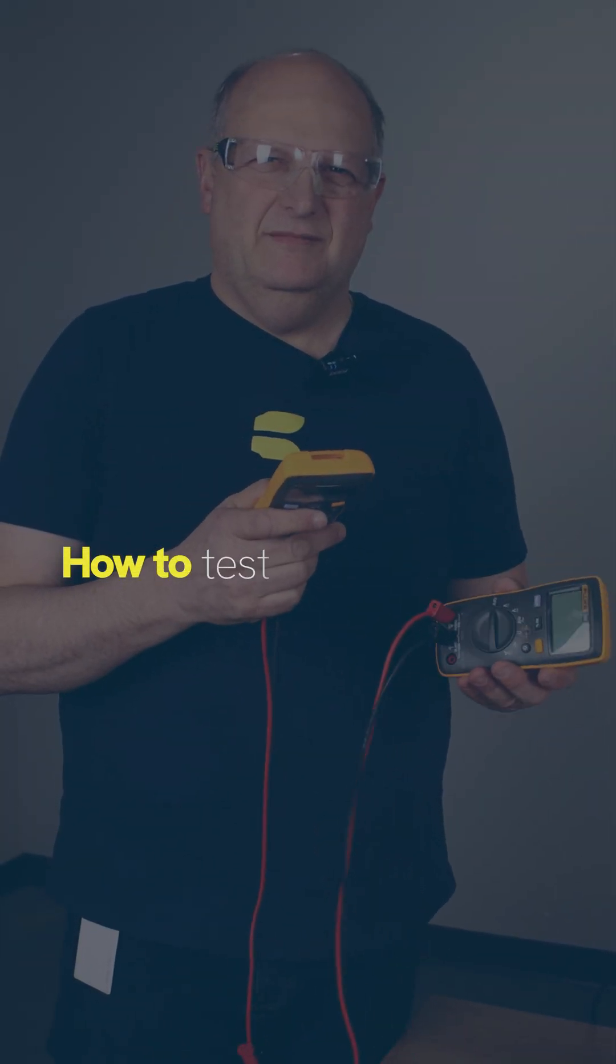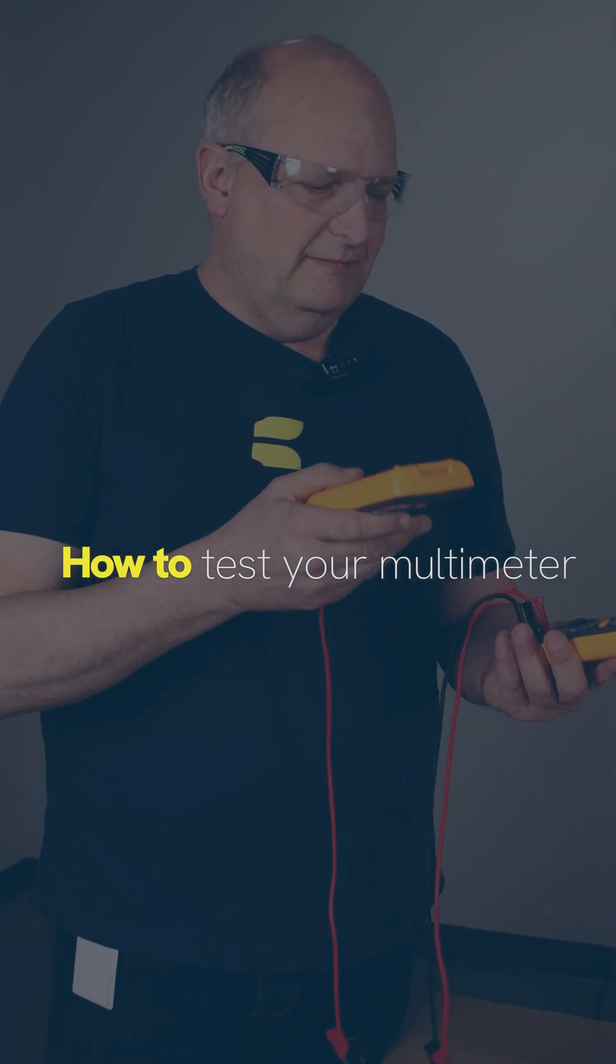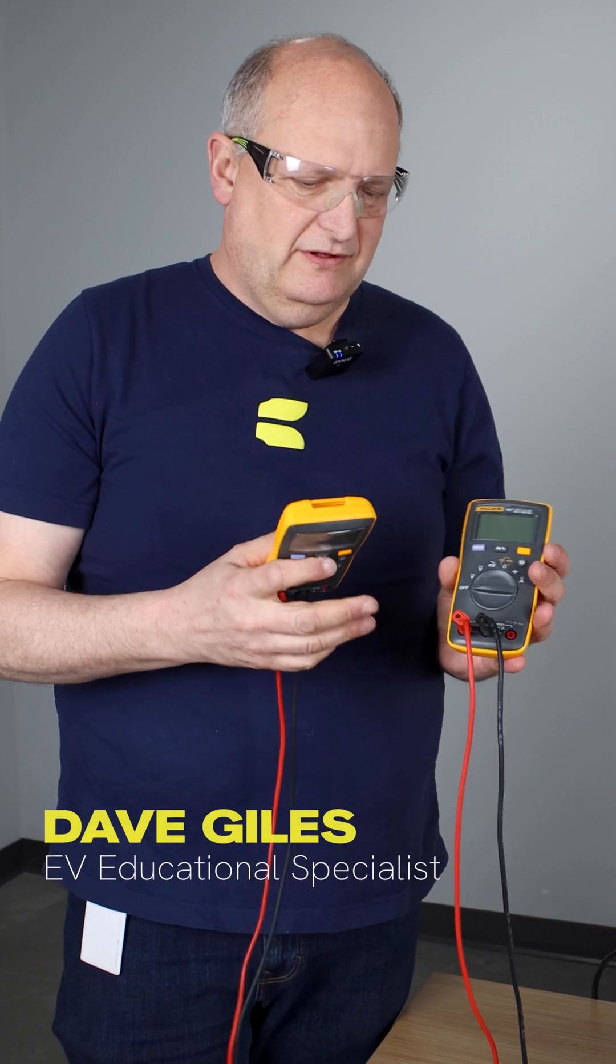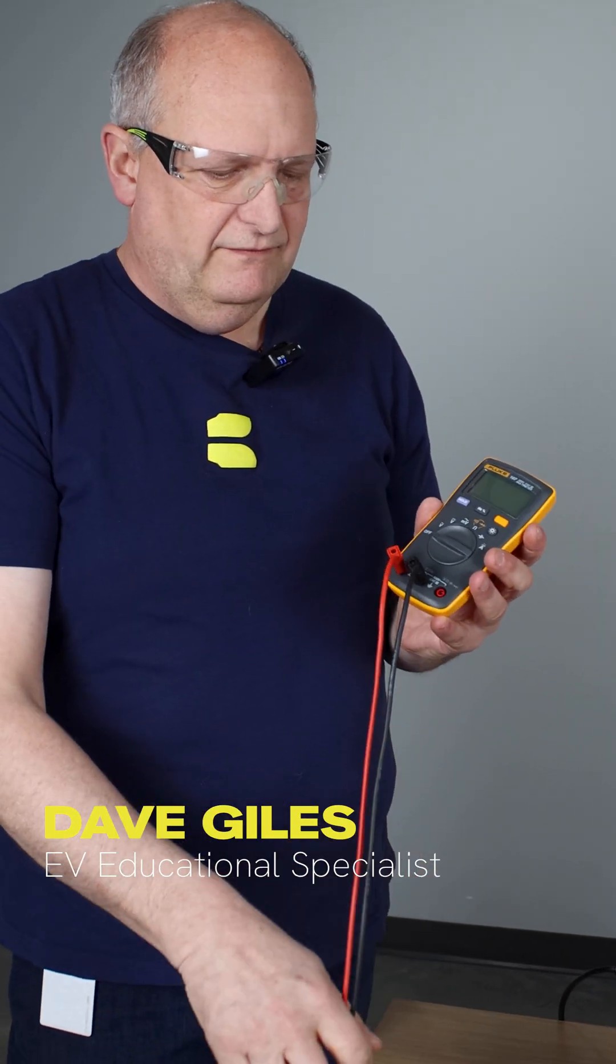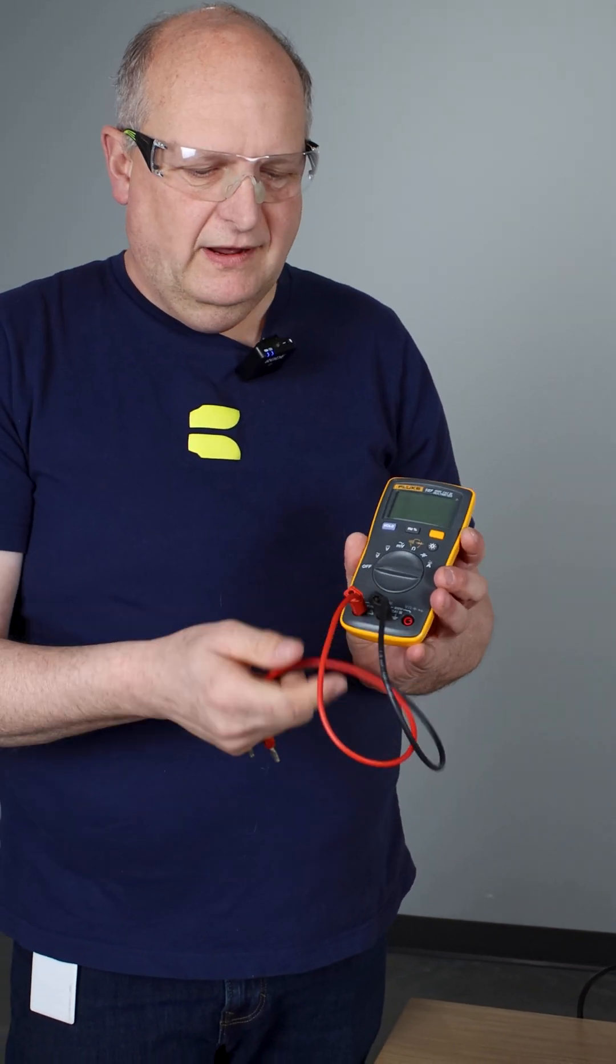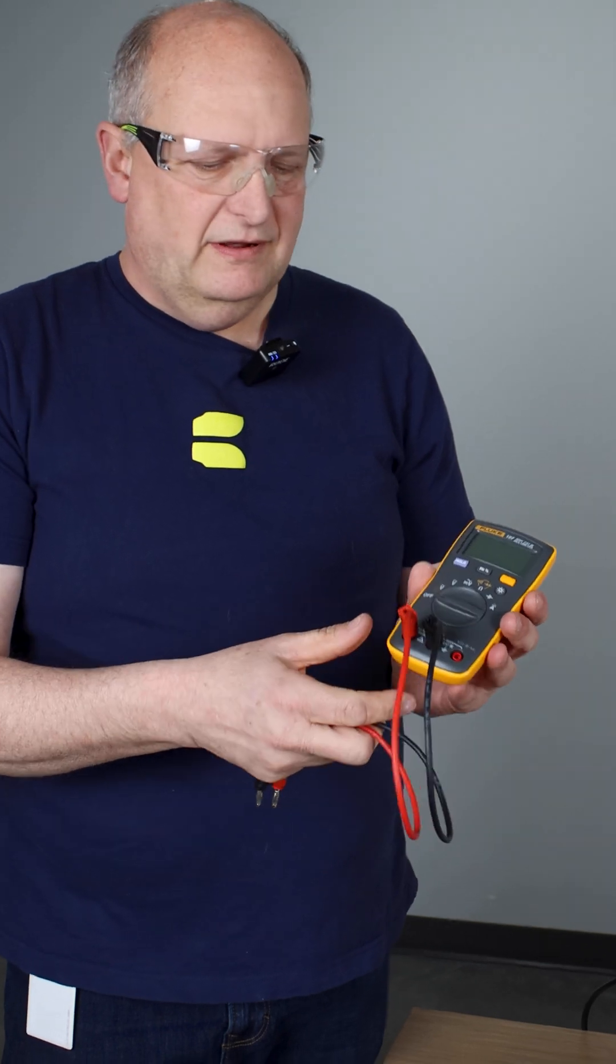We get questions all the time about testing multimeters. In some cases, students will use multimeters on the amp scales, and when they go from amperage to voltage, they forget to move the leads over. At that time, the fuse internally will blow.